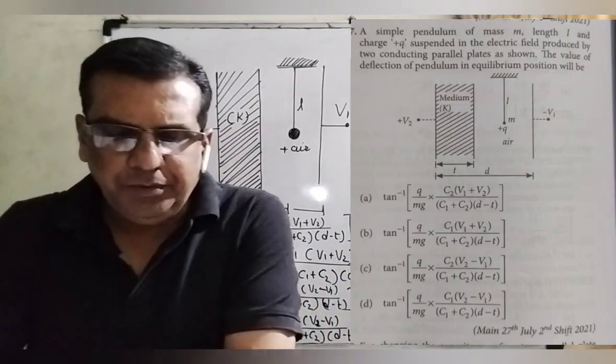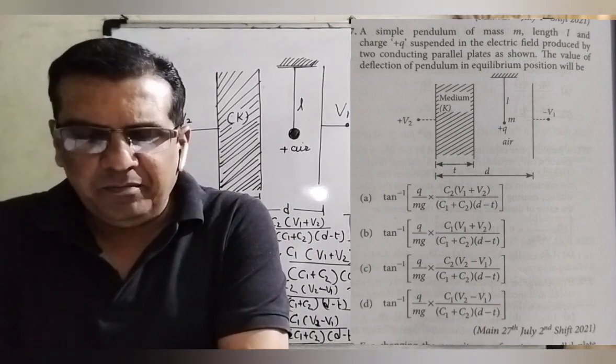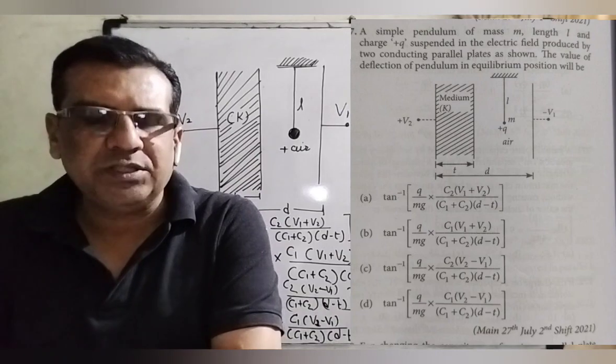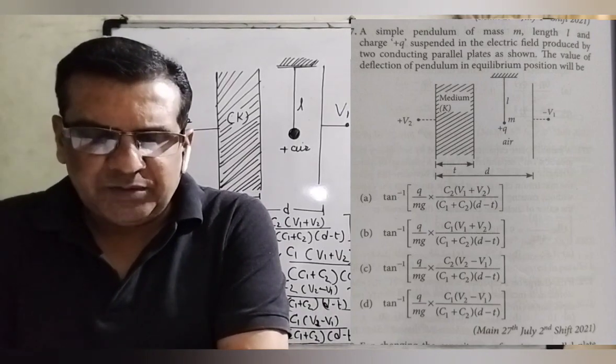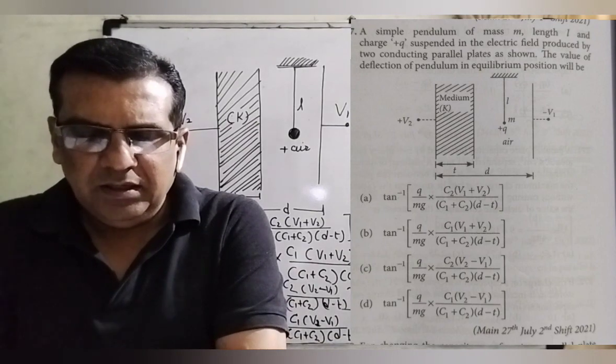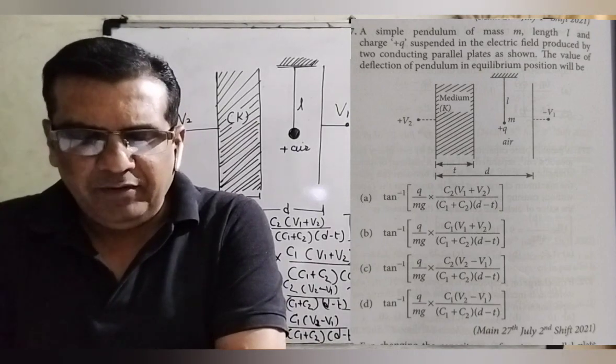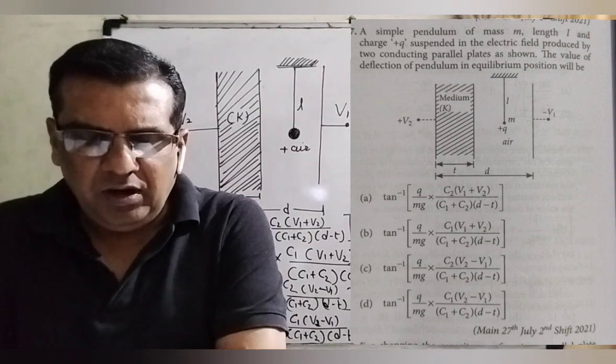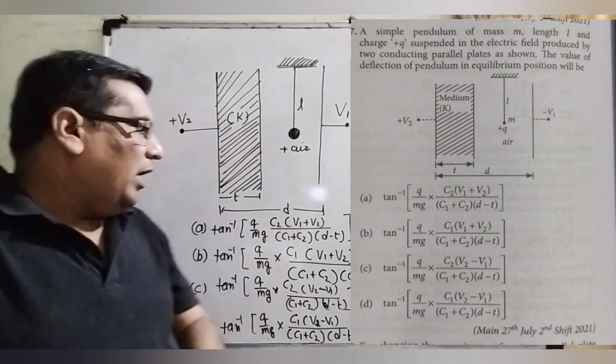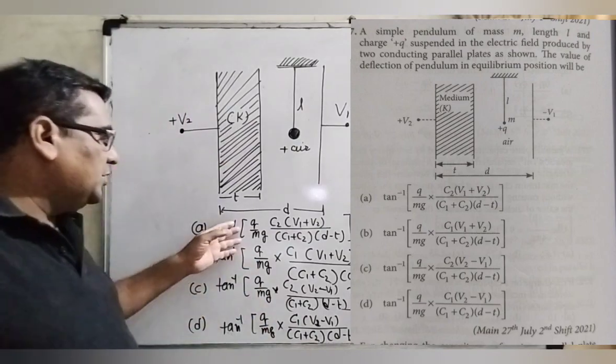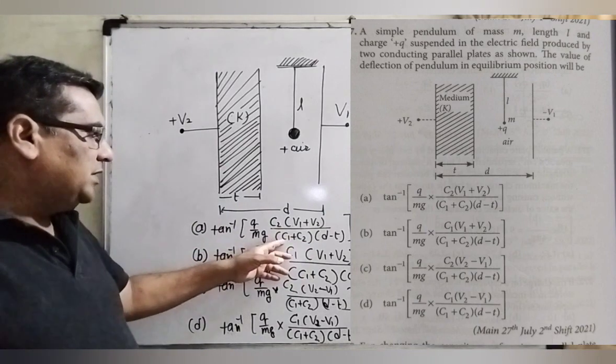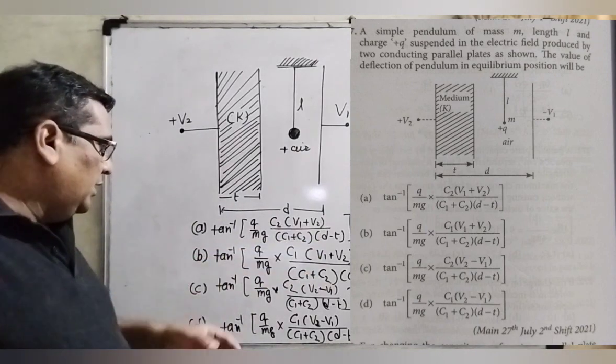Here is the question. A simple pendulum of mass small m, length L and charge plus Q, suspended in the electric field produced by two conducting parallel plates. According to the figure, the value of deflection of pendulum in equilibrium position will be. Here you have given 4 options. Tan inverse Q by mg, C2 in bracket V1 plus V2 upon C1 plus C2 into bracket D minus d.